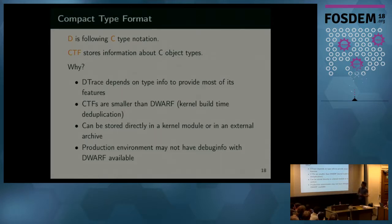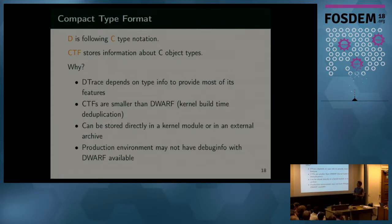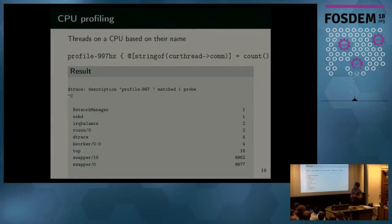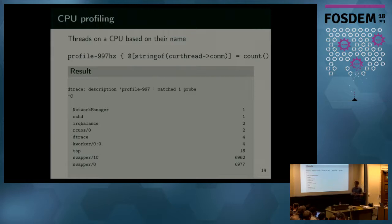D is a superset of C. We are not using DWARF because debug info is not always installed on production machines — it can be big. D-trace historically is based on CTF. CTFs are smaller because at kernel build time we deduplicate DWARF to create a small CTF description, and we either put them in kernel modules or have an archive next to the kernel shipped in an RPM. So we have type information available on production machines. Coming back to the profile provider example, I'm using the built-in variable 'current thread', which has a type. I can reference a member of the task_struct from the Linux kernel and aggregate by name — so it's a profiler that shows you the names of threads seen on CPU.